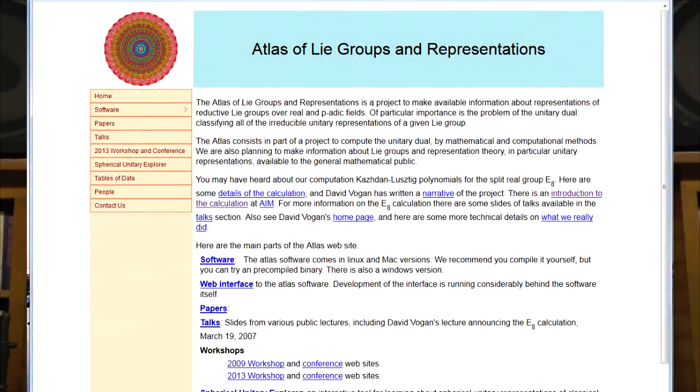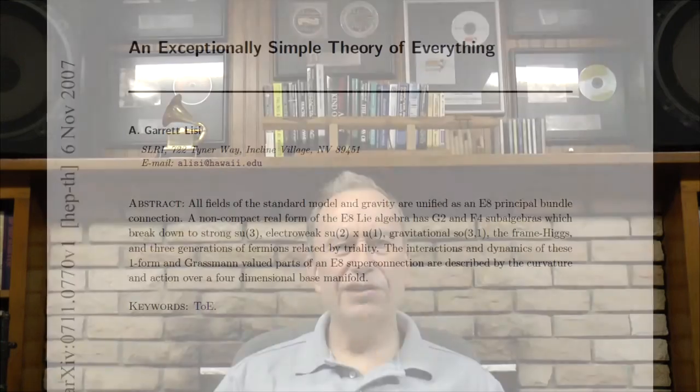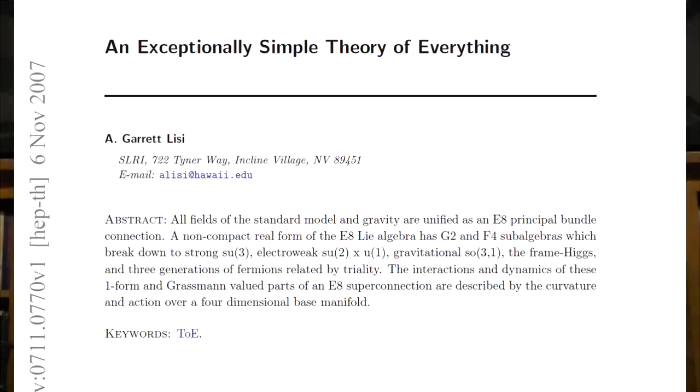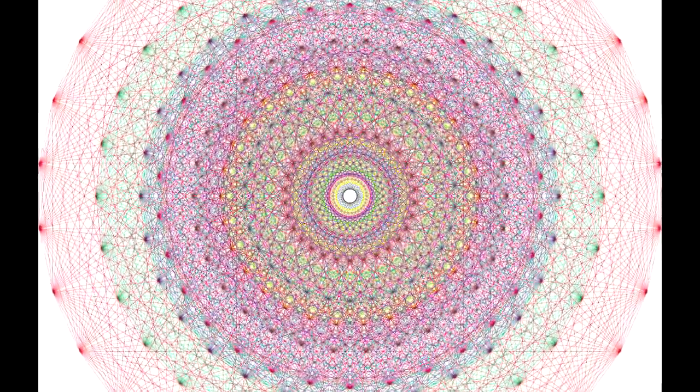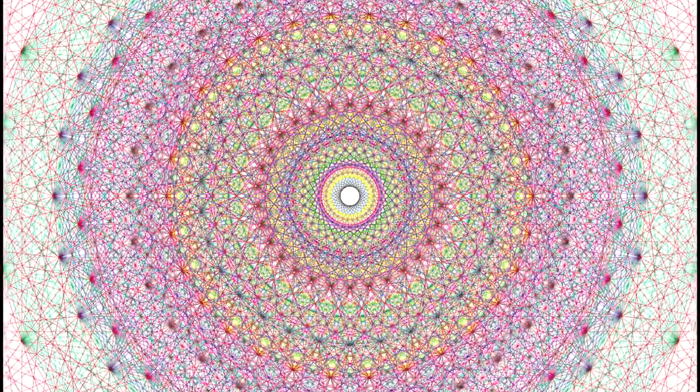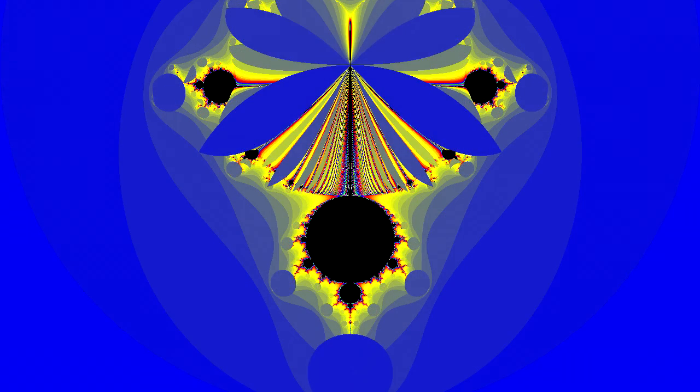With computers, we can now discern the properties of mathematical objects in great detail, and this has inspired amazing new physics. The exceptionally simple theory of everything by FQXI member Garrett Lisi is based on E8, the largest exceptional group, and it is a wonderful example of how math can lead to physics. But the Mandelbrot set also suggests a theory of everything, and I began examining it over a quarter century ago.